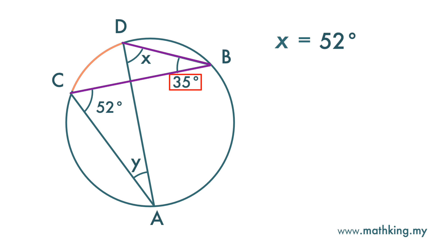Note that angle y at the circumference is also subtended by the same arc CD. This line rises from point C, touches point A, and then back to point D. Since they are subtended by the same arc, they are equal. So angle y is also 35 degrees.